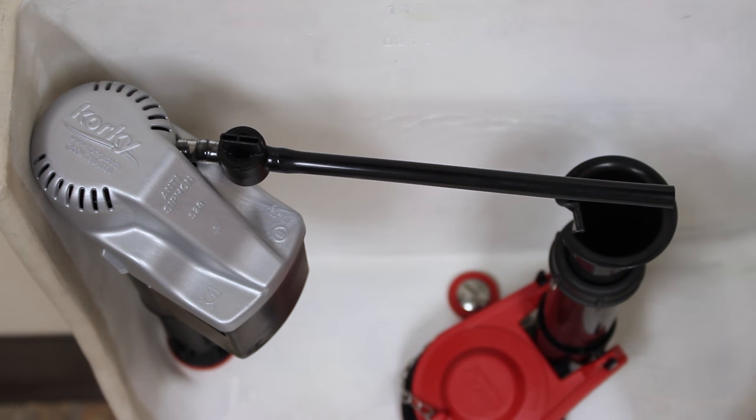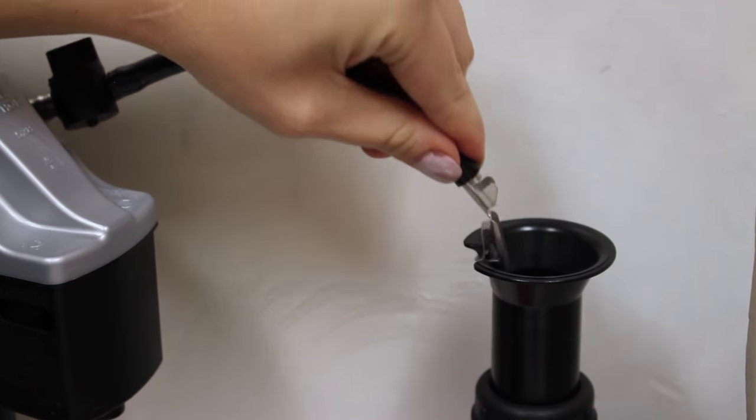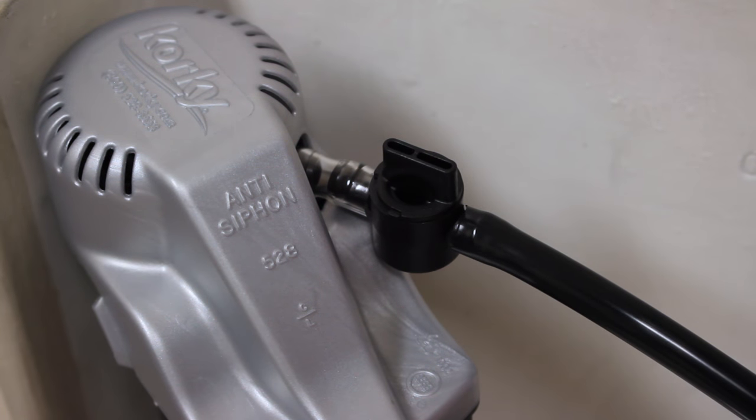Make sure the refill tube has a direct path to the flush valve. Insert the metal clip into the refill tube and then attach the clip to the flush valve. Turn the refill adjuster clockwise to the fully open position.